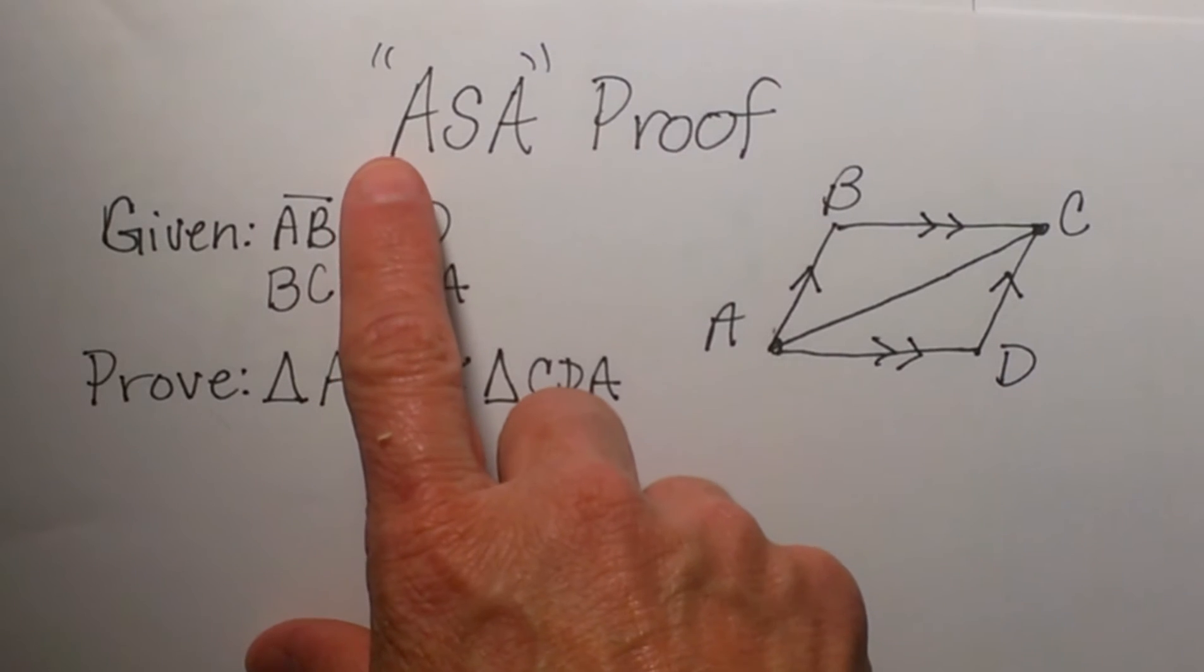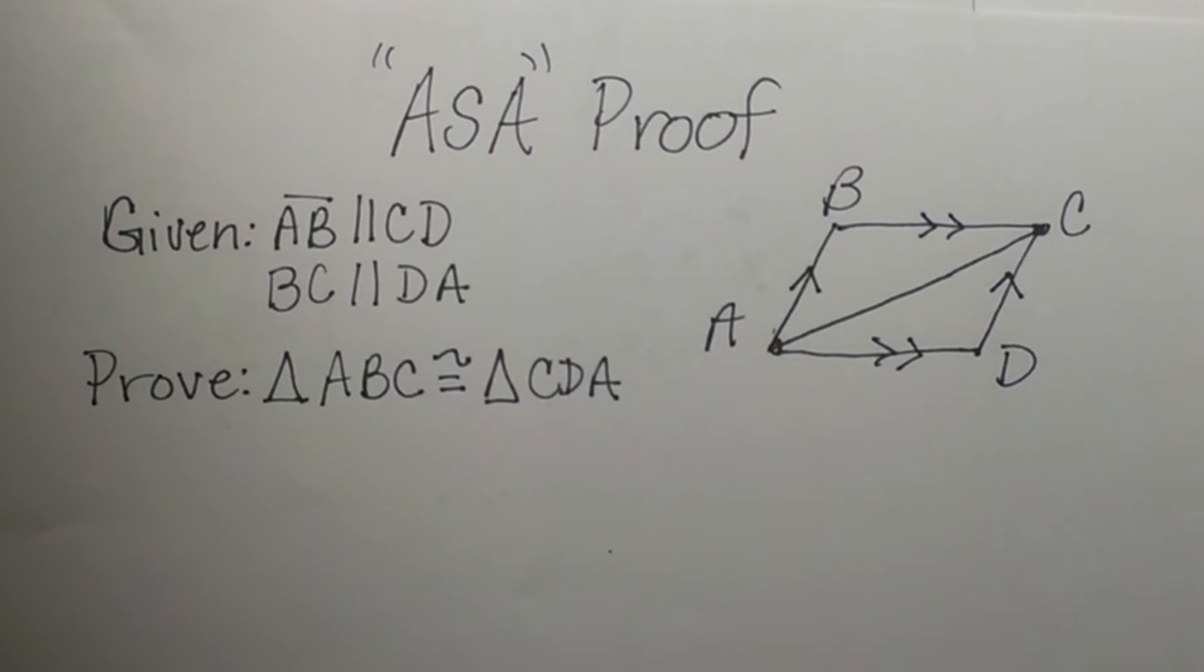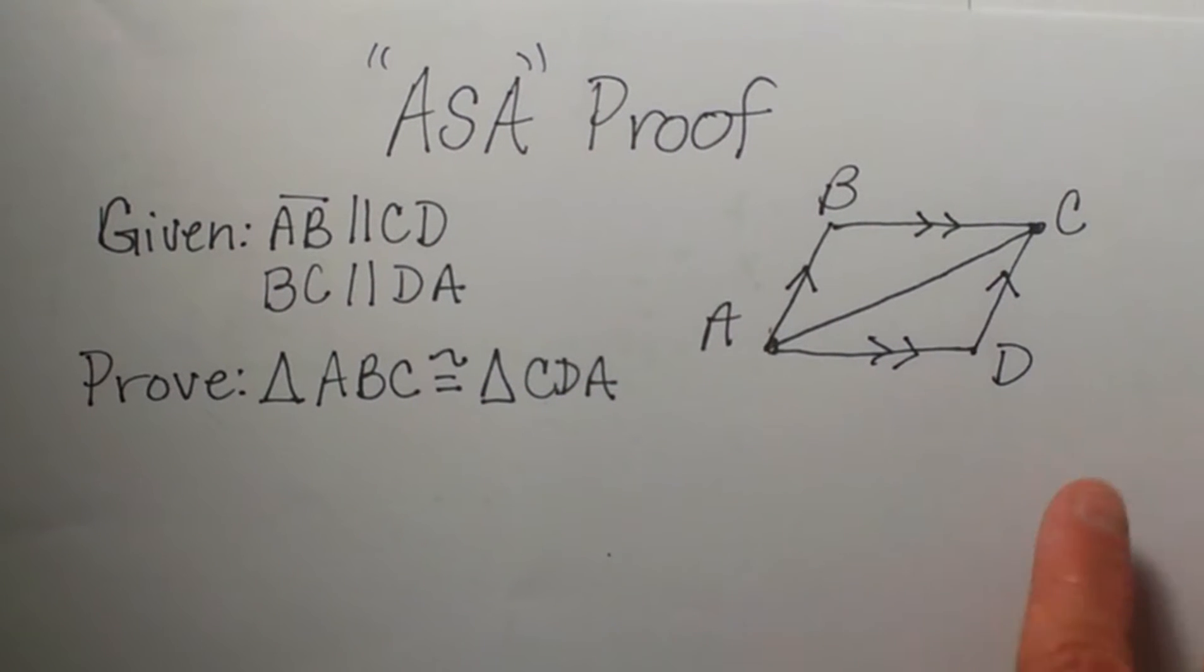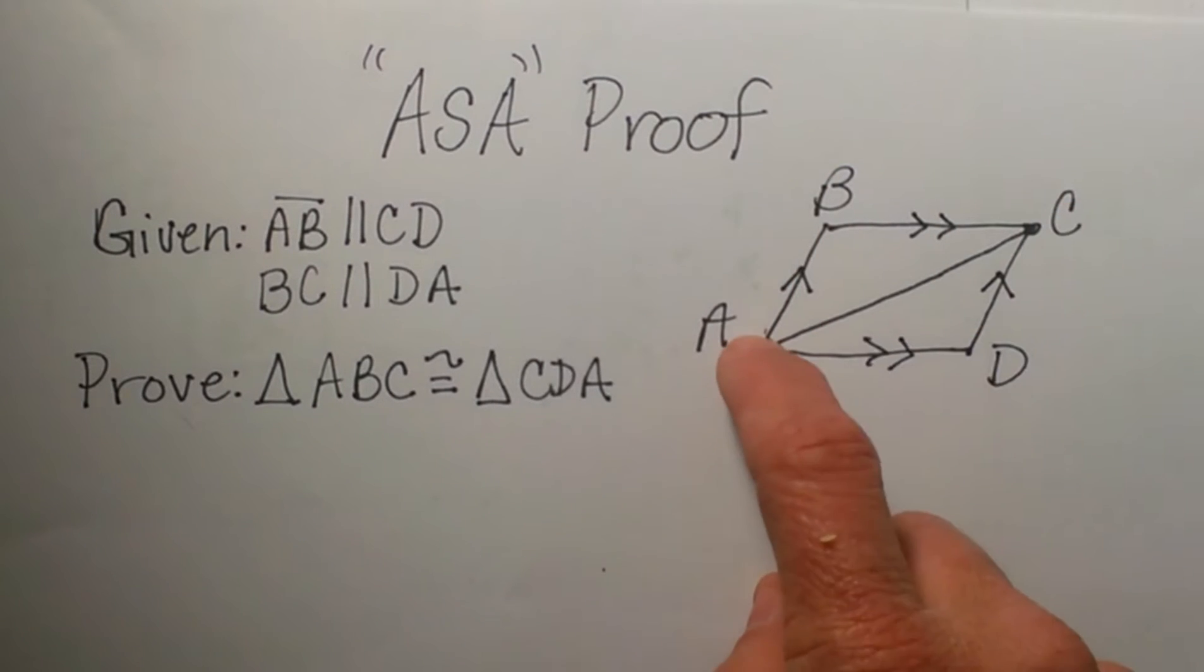Welcome to my math. Today I am going to show you how to use angle side angle to prove that two triangles are congruent. So we are trying to prove that triangle ABC is congruent to triangle CDA.